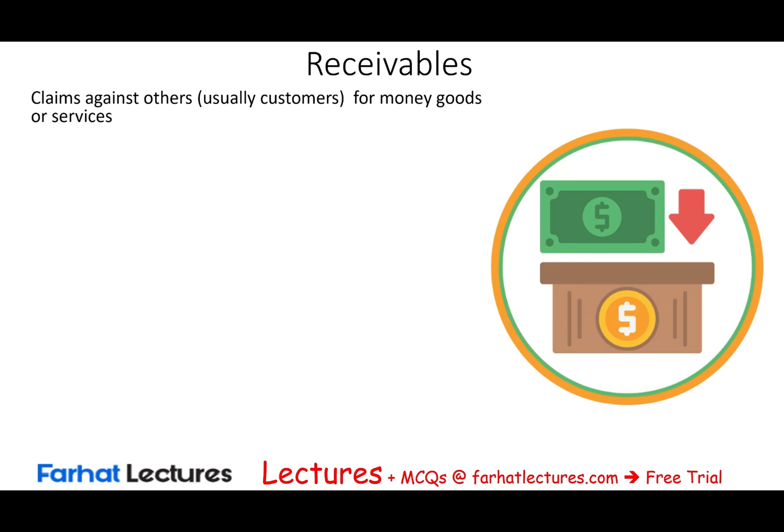A receivable is a claim against others, usually against customers. But you will see shortly that we could have a receivable against some group other than customers. Why would you have that claim against customers? Because you provided the customer some goods or services. If you provided goods or services, it's called accounts receivable.